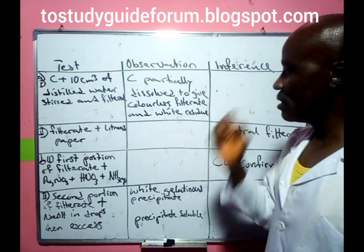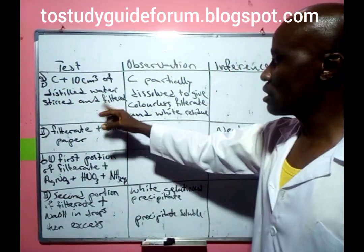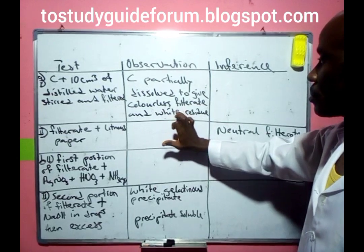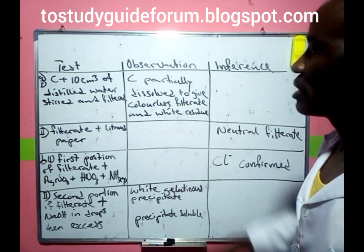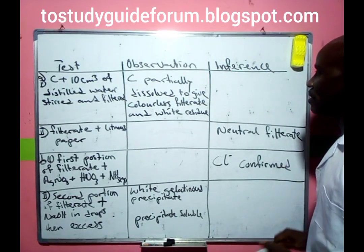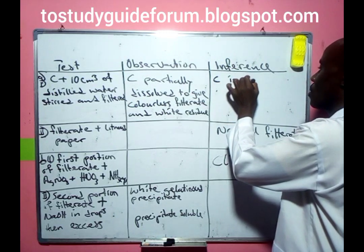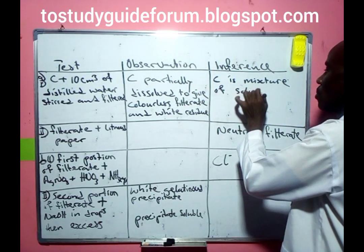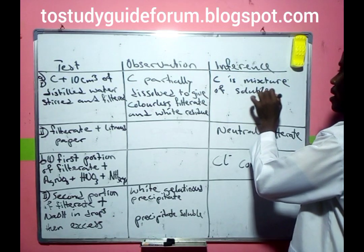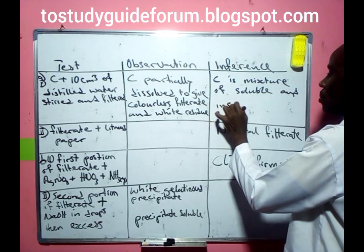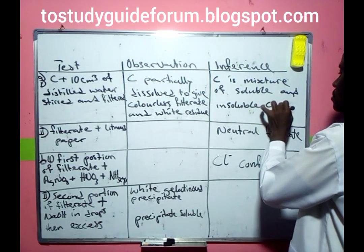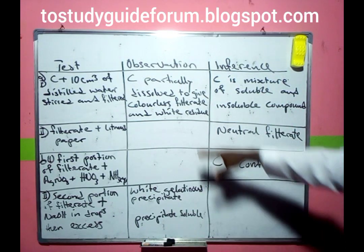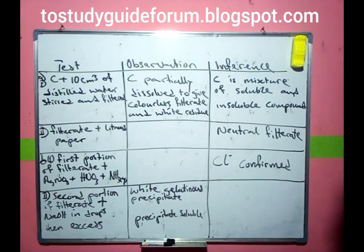In this experiment, C plus 10 cm³ of water is stirred and filtered. It partially dissolves to give a colorless filtrate and a white residue. Since it is partially soluble, what we have here is that C is a mixture of a soluble and an insoluble compound — that is what the partial dissolution means.